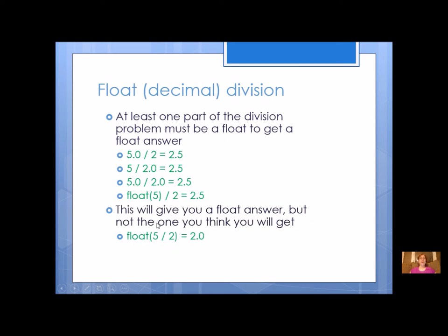Now you can use the float like this, and it will give you a float answer, but it's probably not the one you think. It's not going to give you 2.5 because it's going to do the middle part first, and this is integer division, and then change it to a float. So although the answer is a float, it is not the answer that you're looking for. Be careful and make sure that you're doing your conversions before you do the division.